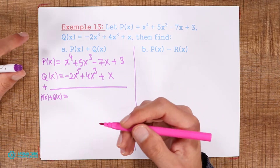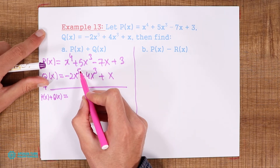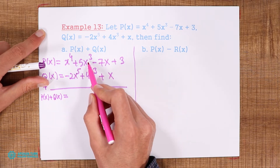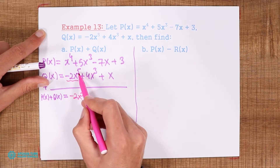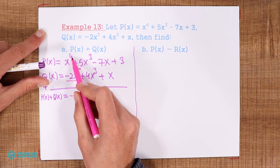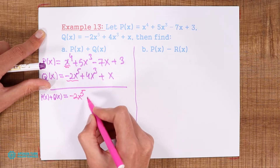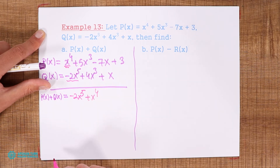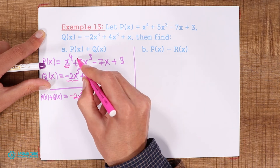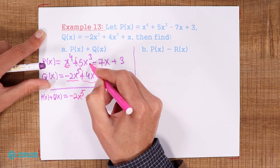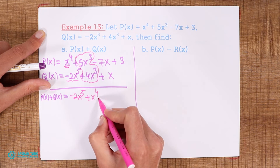We start from the largest power. The largest power here is five. Do we have any other x to the power of five? No, we do not, so we write -x⁵ by itself. After five we have four: x⁴ appears only in the first polynomial, so we write x⁴ by itself. Next, x³: we have 5x³ and 4x³ — they are like terms because they have the same powers and same variables, so 5 + 4 = 9x³.